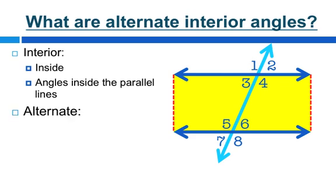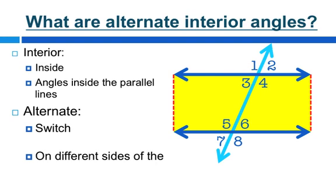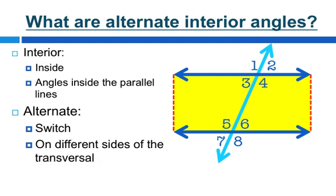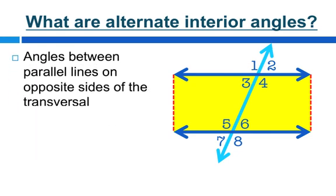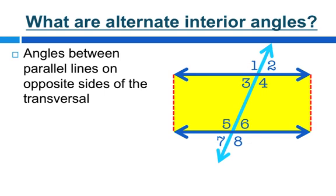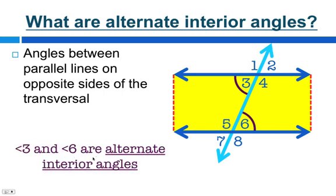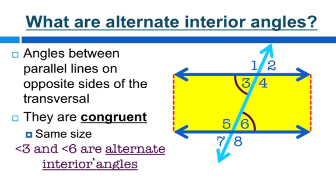Now take the word alternate. Alternate means switched. In this case, it means the angles that are on different sides of the transversal. So if you put that all together, alternate interior angles are angles between parallel lines on opposite sides of the transversal. So if we have angle 3, the alternate interior angle for angle 3 is on opposite sides of the transversal — that would be angle 6. Therefore, angle 3 and angle 6 are alternate interior angles, and alternate interior angles are congruent, which means they're the same size.